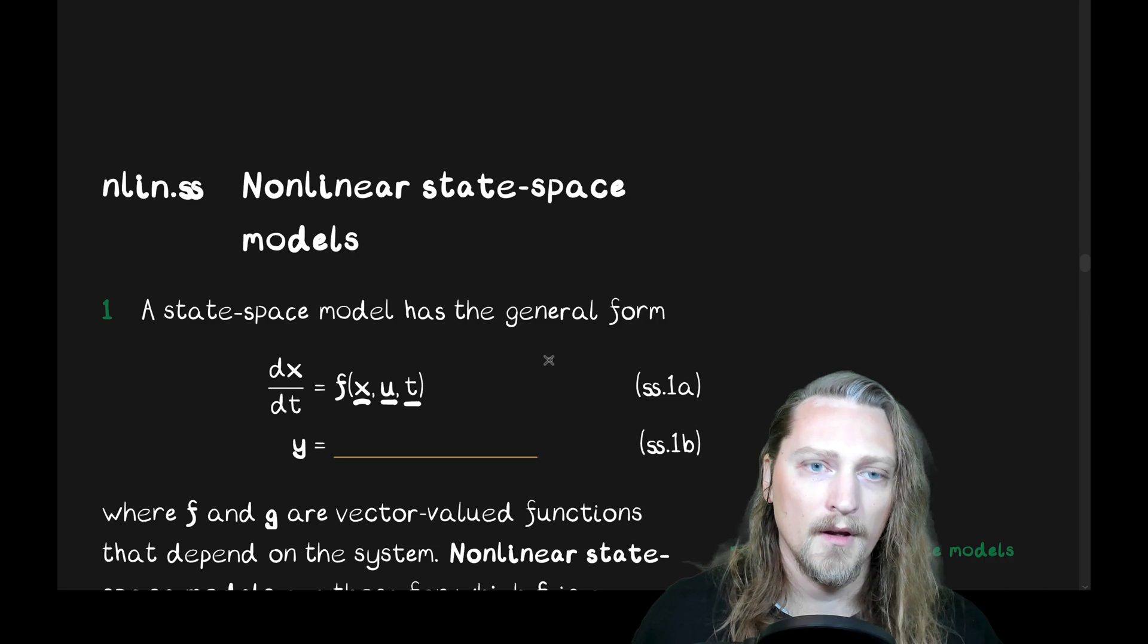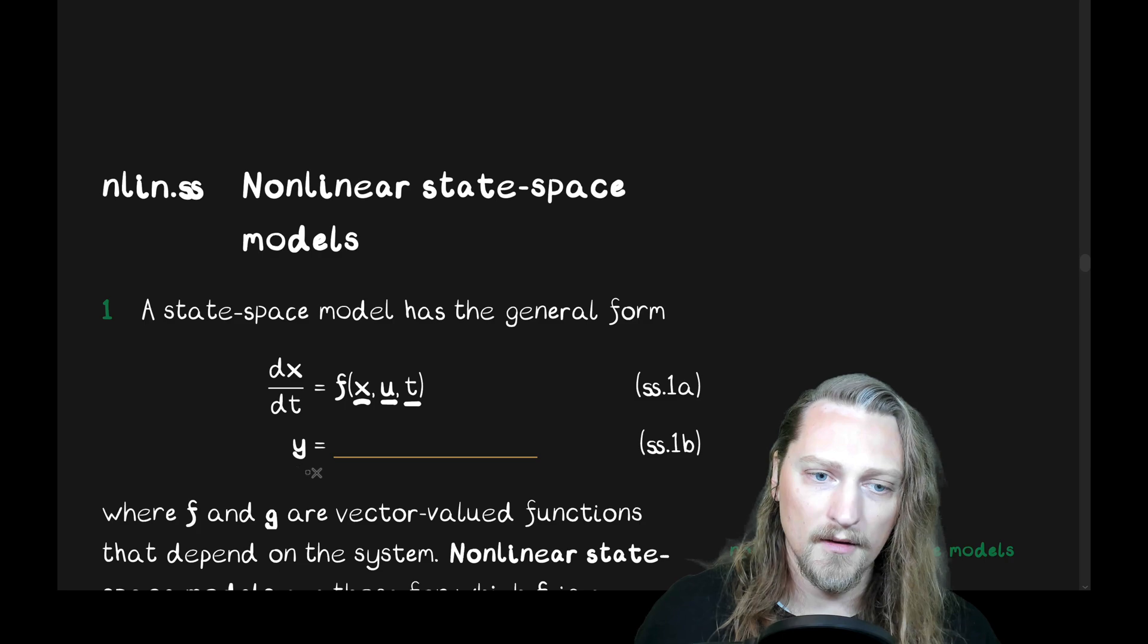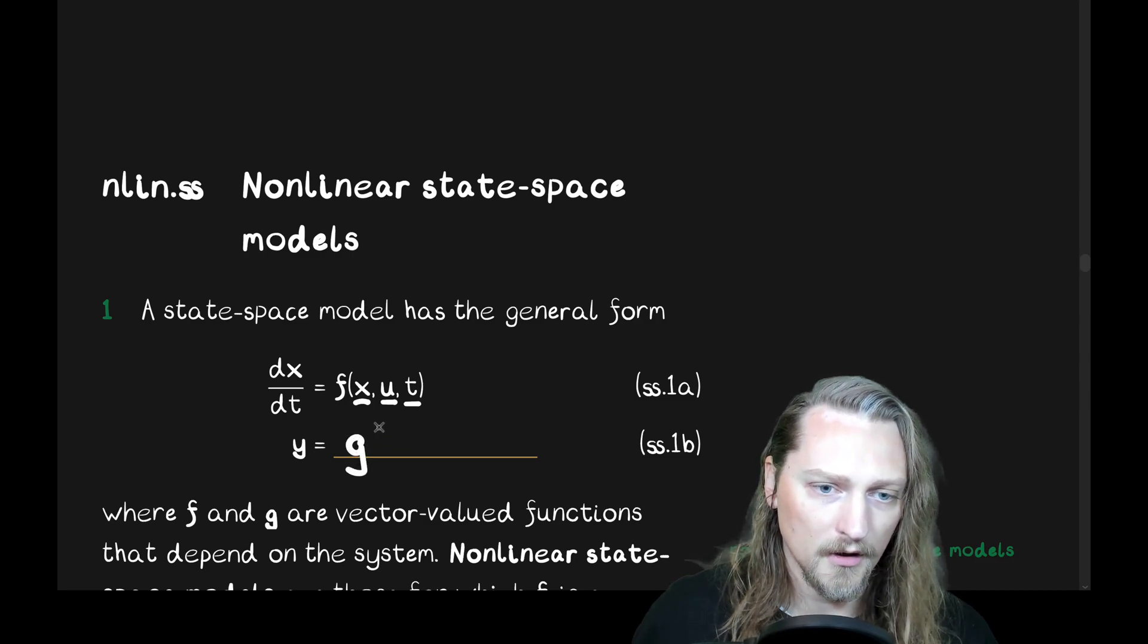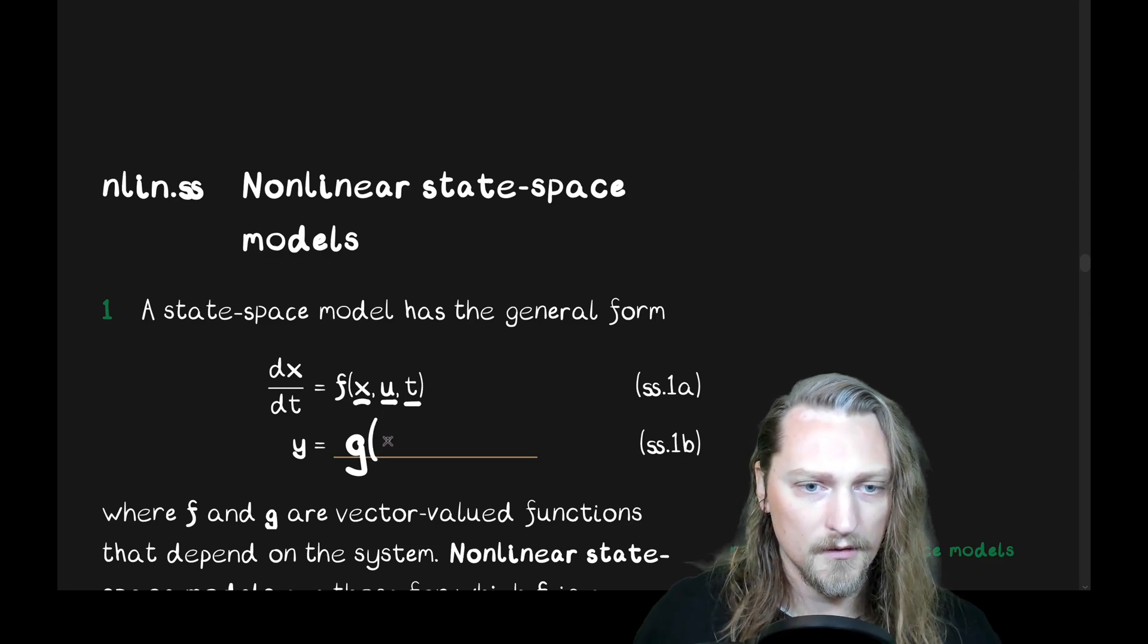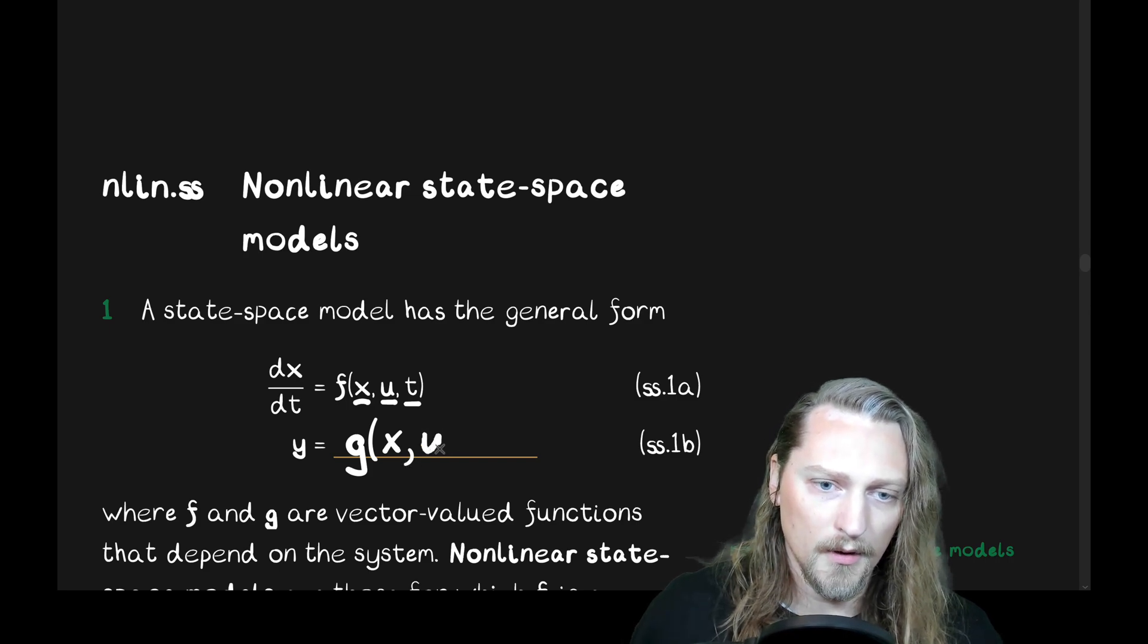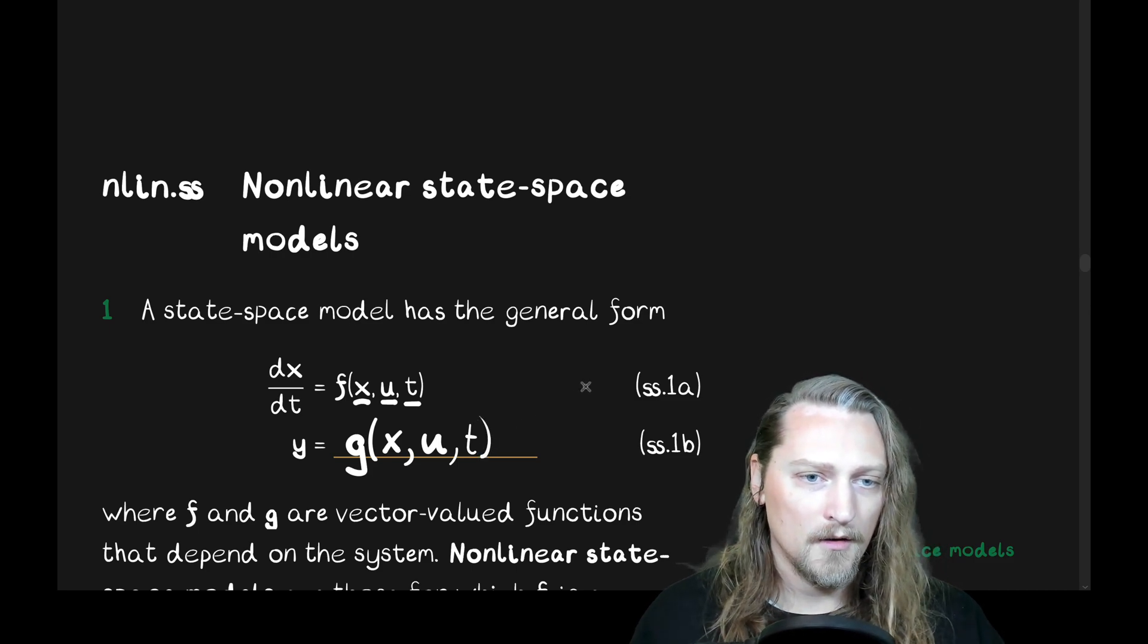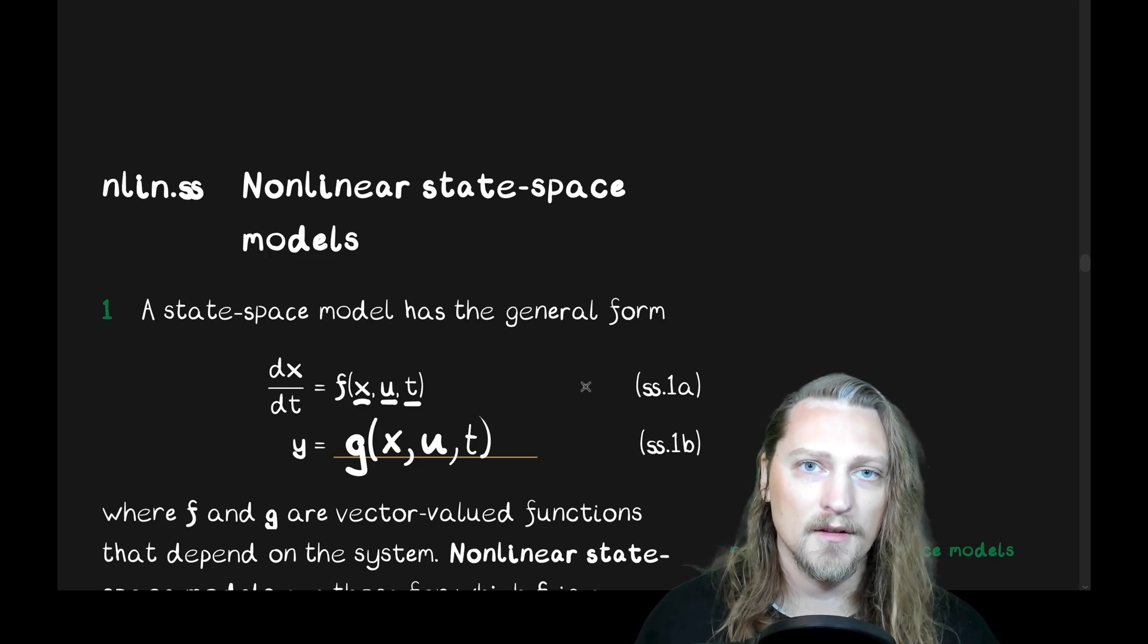Okay? So, this is the state equation, and this is the output equation, 1b, and it is also a vector-valued function of vectors x, the state vector again, the input vector u, and time. Okay, so, a general form of a nonlinear state-space model takes on this form here.